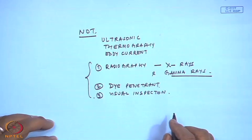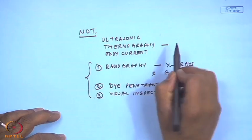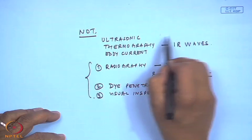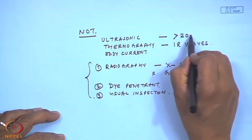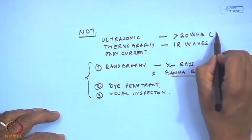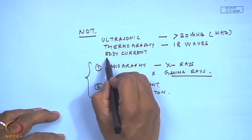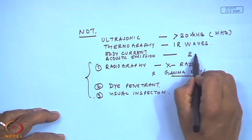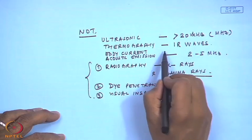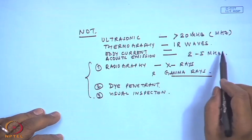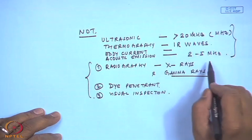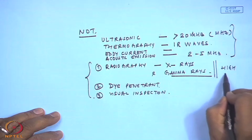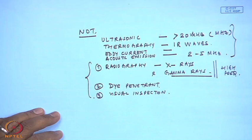If we look at the electromagnetic spectrum, thermography was mostly by IR waves, ultrasonic was by waves beyond 20 kilohertz or in the megahertz range. There was acoustic emission also in the range of maybe 2 to 5 megahertz, and eddy current depends on the magnetic field. But looking at the frequencies of ultrasonic, IR waves, and acoustic emission, these x-rays and gamma rays are very, very high frequency waves.